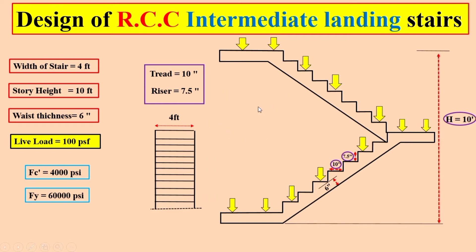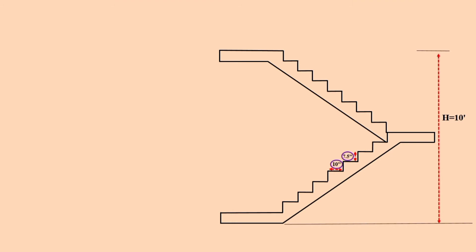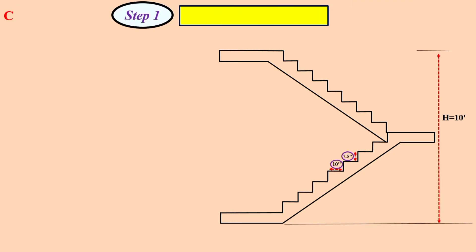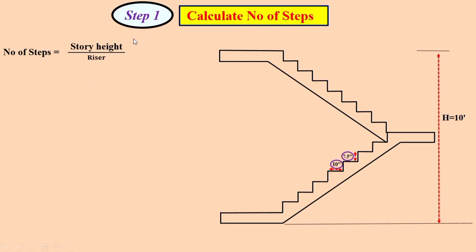So dear students, we will design this in steps. Now dear students, in the first step we will calculate the total number of steps. As you know, in a previous lecture we calculated the number of steps, and we used a formula: if we take the total height and divide it by the riser size, then we get the total number of steps.